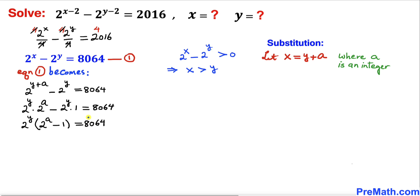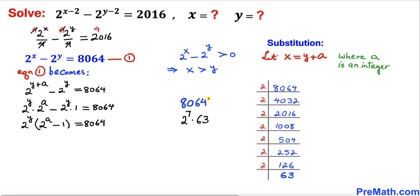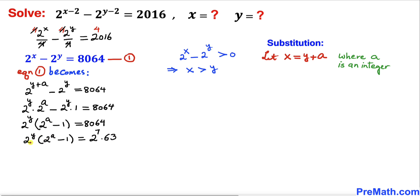Now let's focus on the right hand side number 8064 and find its factors. Dividing successively by 2, we get seven factors of 2, giving us 2 power 7 times 63. Therefore, 8064 can be written as 2 power 7 times 63.